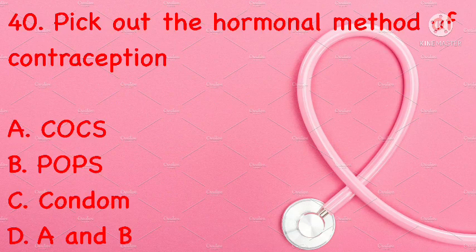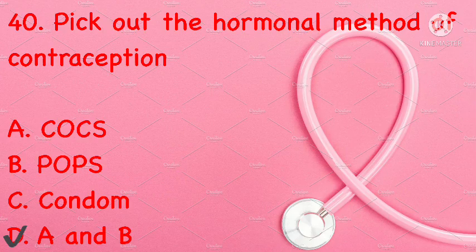Pick out the hormonal method of contraception: COCs, POPs, condom, or A and B. Correct answer is D: A and B (COCs and POPs).